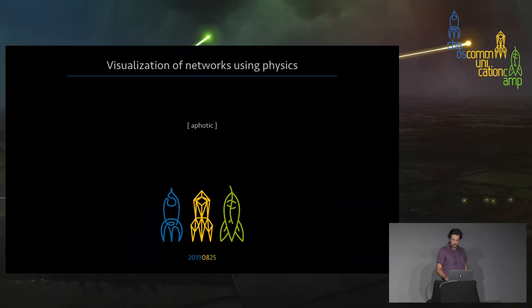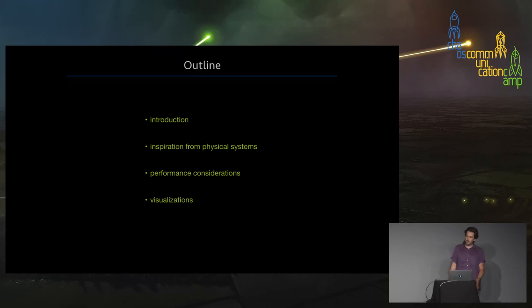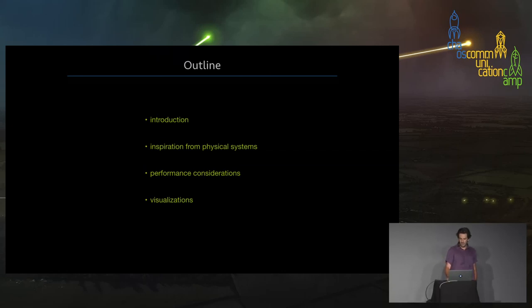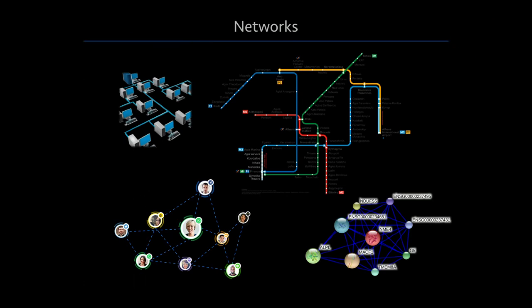Hello, thank you for coming. I will be talking about visualization of networks or graphs using physics. It's a topic that will be a combination of computer science, physics, and visualization. This is a brief outline: I will start with an introduction, state what the problem is and why we want to look at it, then describe how we can draw inspiration from physical phenomena to tackle it, then briefly mention some performance considerations.